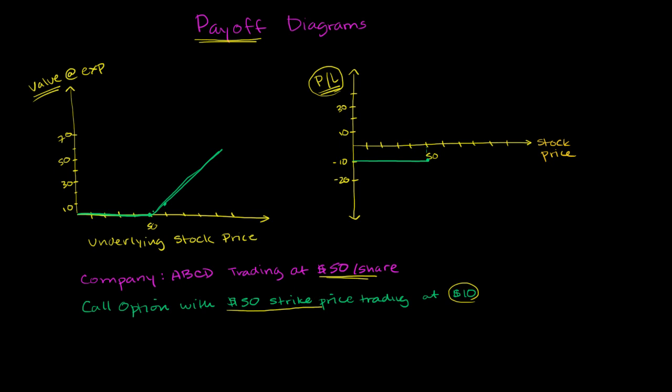Then all of a sudden, if the stock price goes above $50, you would exercise it. But you would still have a negative profit because you still haven't made up the price of the option. All the way up until $60. At $60 per share for the underlying stock price, you could exercise the option, buy the stock at $50, sell it at $60. You would make $10 doing that.